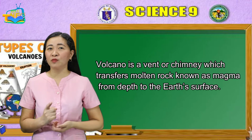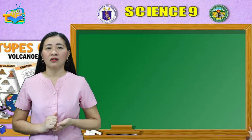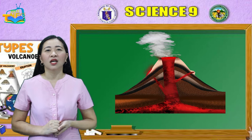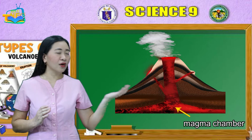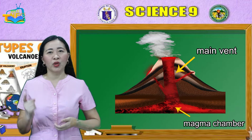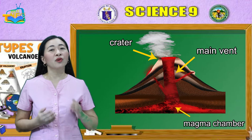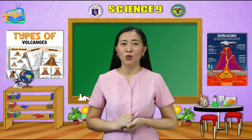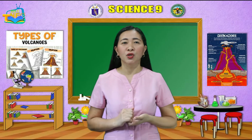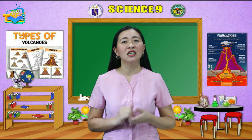A volcano is a vent or chimney which transfers molten rock known as magma from depth to the Earth's surface. This image shows the parts of a volcano. The main parts are the magma chamber, where molten rock or magma is found; the main vent, an opening through which an eruption takes place; and the crater, a basin-like depression over a vent at the summit of the cone. Most people assume that volcanoes are tall, cone-shaped structures that erupt violently and produce a huge amount of ash, gas, and lava. However, not all volcanoes are limited to these features.